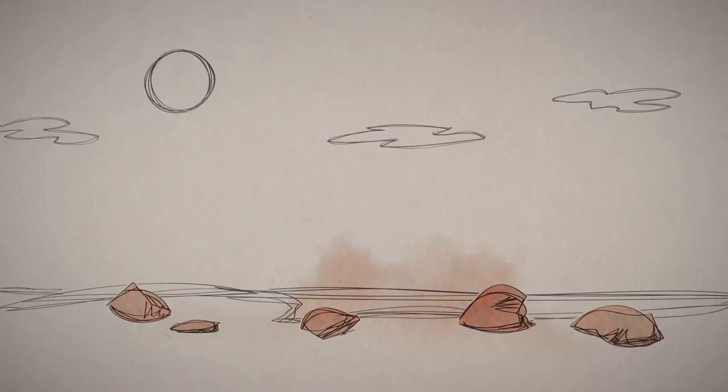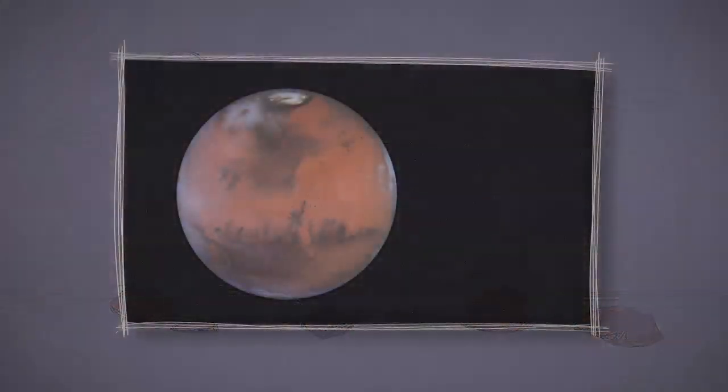When rusty dust from those rocks gets kicked up in the atmosphere, it makes the Martian sky look pink. From a long way away, the whole planet looks kind of reddish.